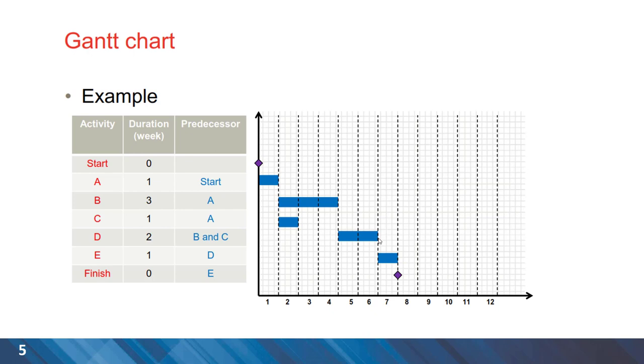Activity D is dependent to activity B and C. This means that activity D cannot be started until both activities B and C have been concluded at the end of the fourth day. And finally, activity E with duration of one day and the finish milestone for this project, which is at the end of day seven.